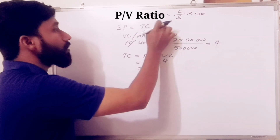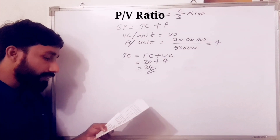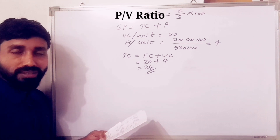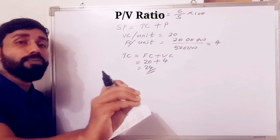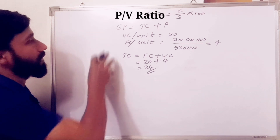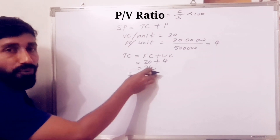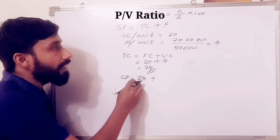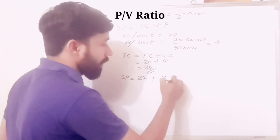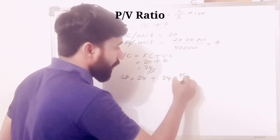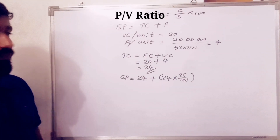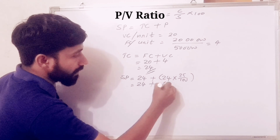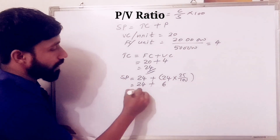Total cost plus profit gives selling price. The selling price is fixed to yield 25% on cost. Total cost is Rs 24. So selling price equals 24 plus 25% of 24, which is 24 plus 6, equal to Rs 30.